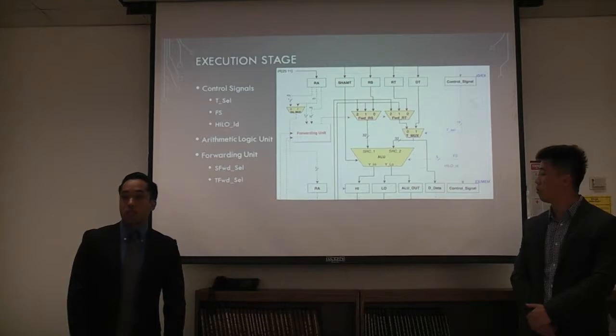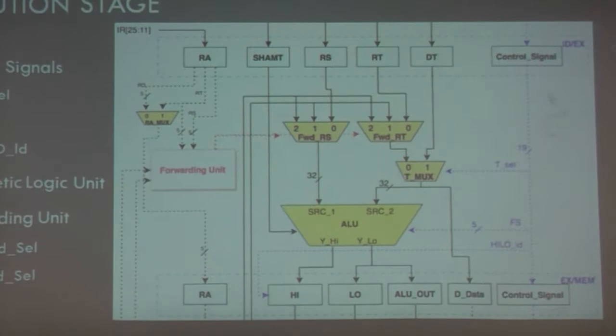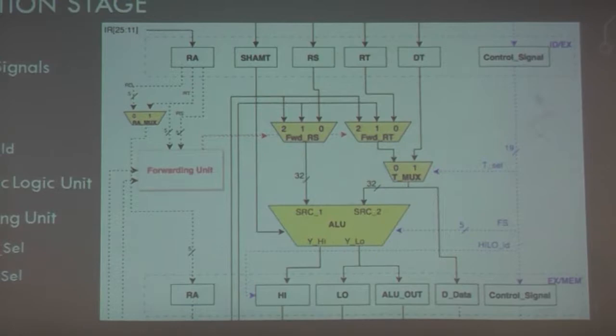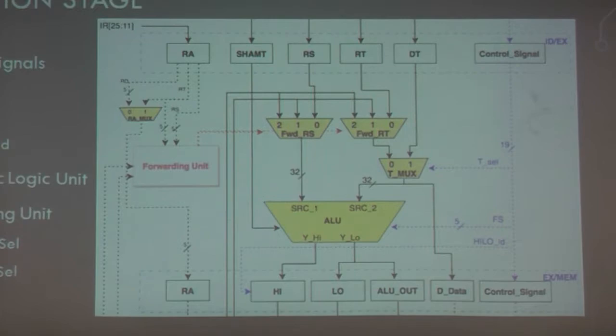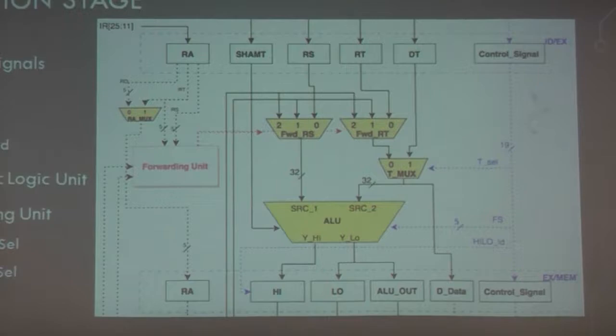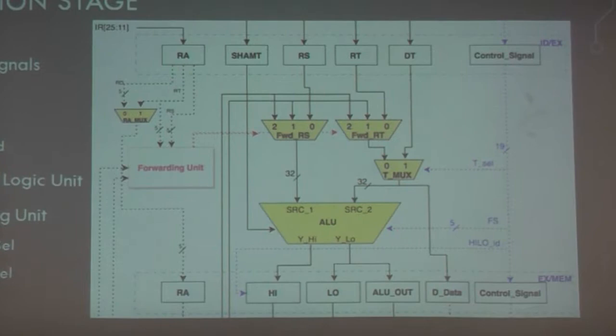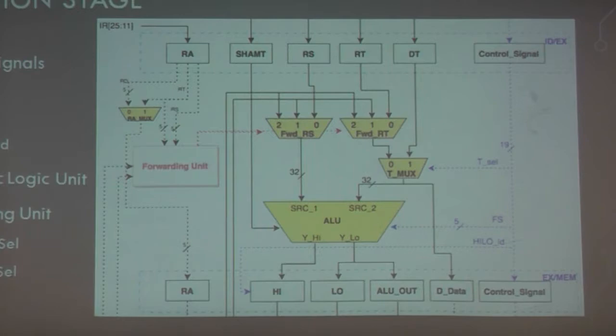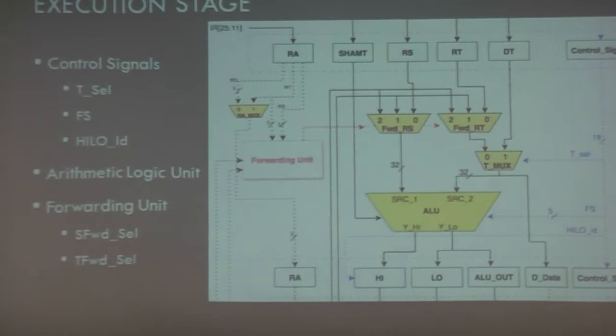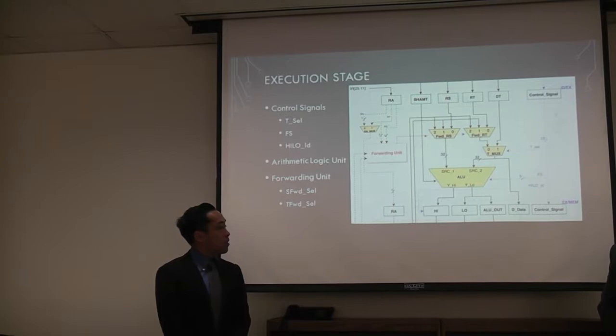During the execution stage, since all signals are already in registers, we have the freedom to perform whatever operation we want. A signal called FS is generated in the control unit to specify which ALU operation will be executed. As shown in the diagram, there are several MUXes — all data passes through those MUXes, goes through the ALU operation, and then gets saved to the output registers.